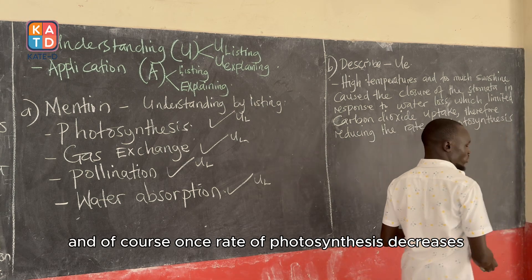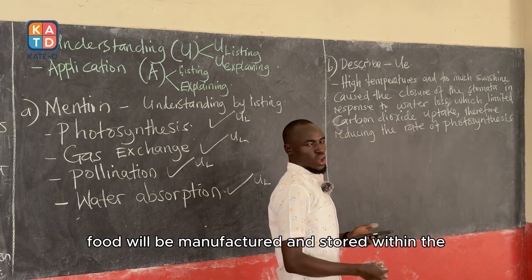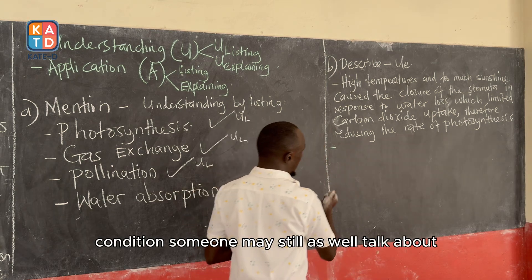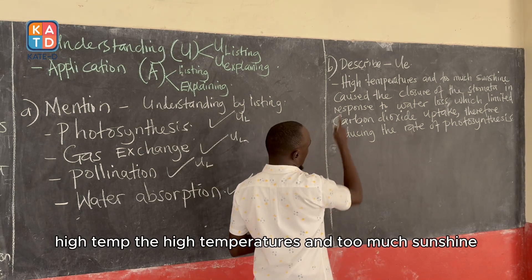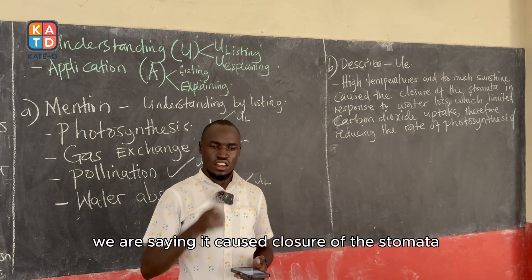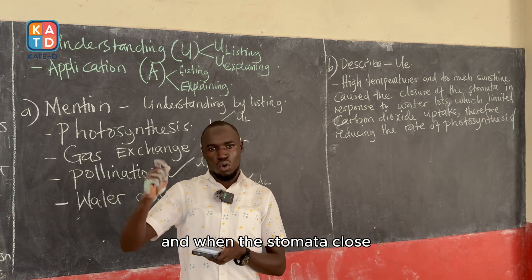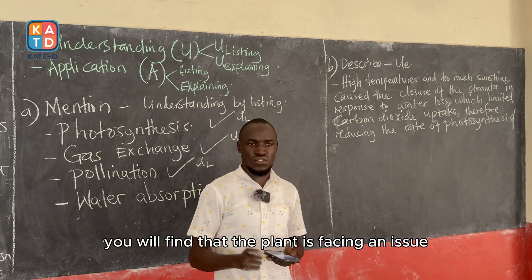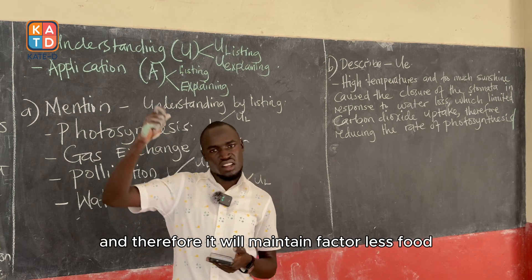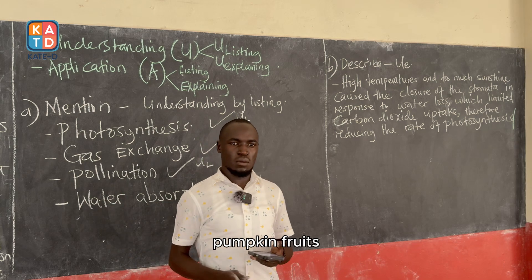Once the rate of photosynthesis decreases, meaning less food will be manufactured and stored within the pumpkin fruits. Someone may also talk about high temperatures and too much sunshine causing closure of the stomata in response to water loss. When the stomata close, the plant faces limited carbon dioxide intake, and therefore it will manufacture less food, which will be stored in very few and small pumpkin fruits.